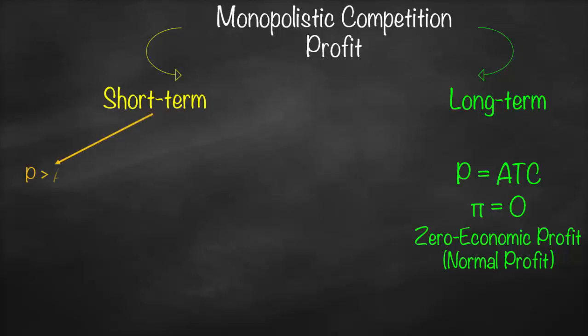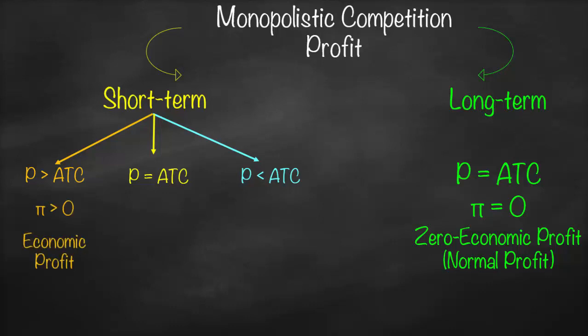However, in the short run we have one of three scenarios: either price is bigger than average total cost, price is equal to average total cost, or price is lower than average total cost. If price is bigger than average total cost, it means that our profit will be bigger than zero, therefore we have economic profit, which will encourage new firms to enter the market because barriers to entry are very low.